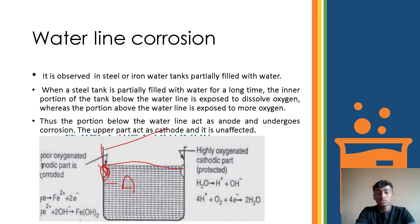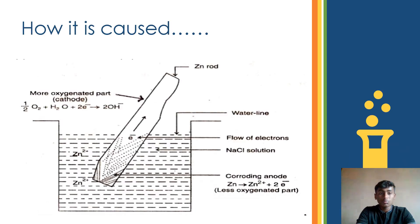Let us see these cell reactions. Let us go to a small experiment related to this. Take a beaker and fill it with NaCl solution, and immerse a zinc rod and leave it for an hour. Then you will observe electrons are flowing in the water level under the NaCl solution. This is the water line.